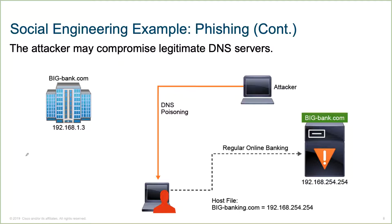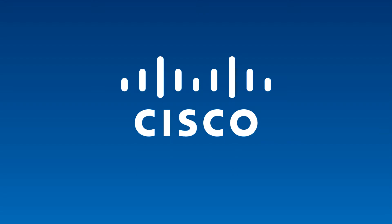Going a little bit deeper into the phishing conversation — compromising known legitimate DNS servers. So when the unsuspecting user is trying to go to the valid URL, that DNS entry that was compromised, or if you will, poisoned, is actually going to send the unwitting user to an attacker website, an attacker resource, because of the DNS A record entry that has the wrong information or is poisoned.